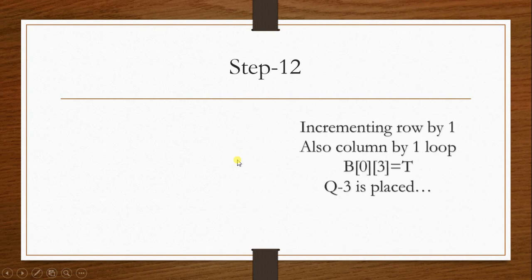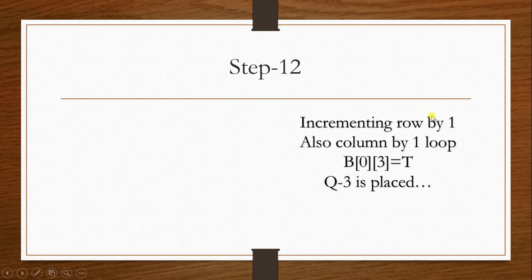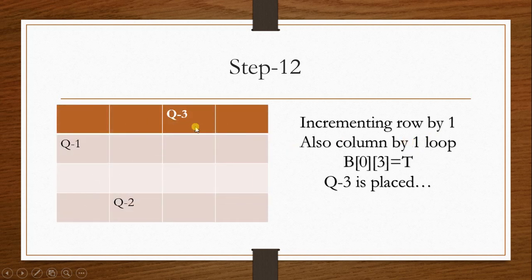Step 12: Incrementing row by 1 and column by 1, the column is incremented and checked. Since the next column's starting position is a safe location, no further comparisons are needed. That location is fixed and Q3 is placed there.